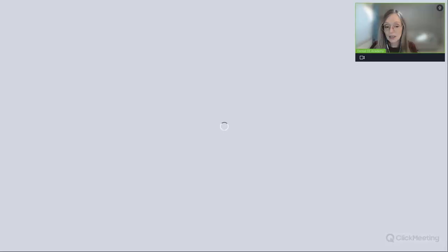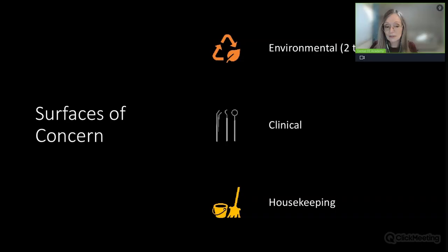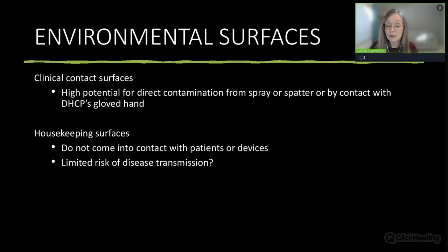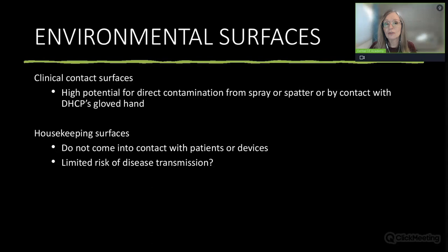There are two types of environmental surfaces: clinical contact surfaces, which come into direct contact with our gloved hand or spray and spatter from the patient, and housekeeping surfaces, which do not come into contact with patients or devices. Clinical contact surfaces include the light handle, unit handles, and the chair. Housekeeping surfaces are everything else—floors, walls, ceilings, and countertops.